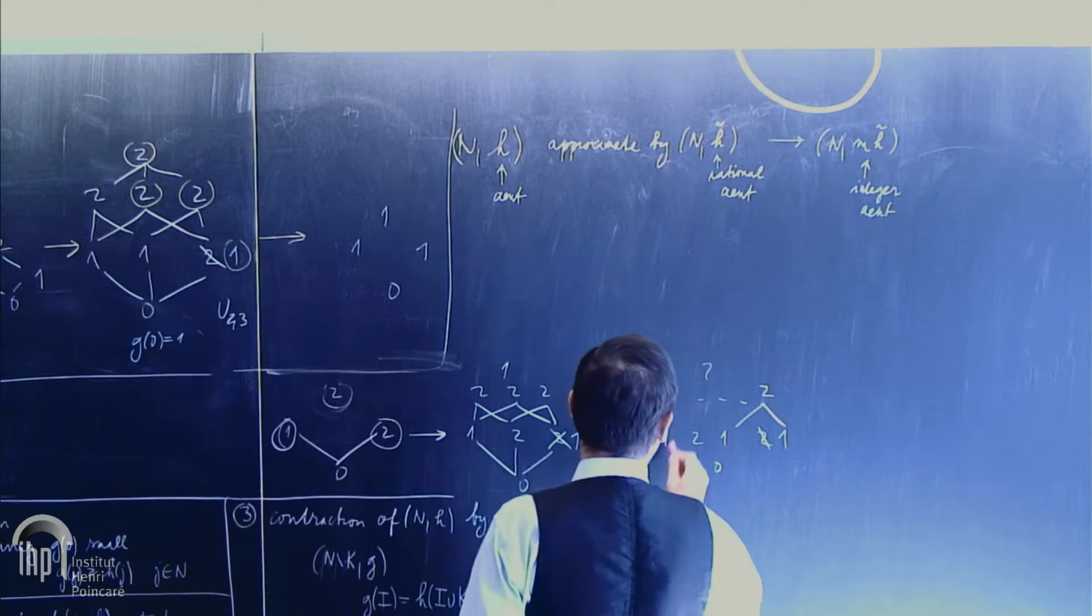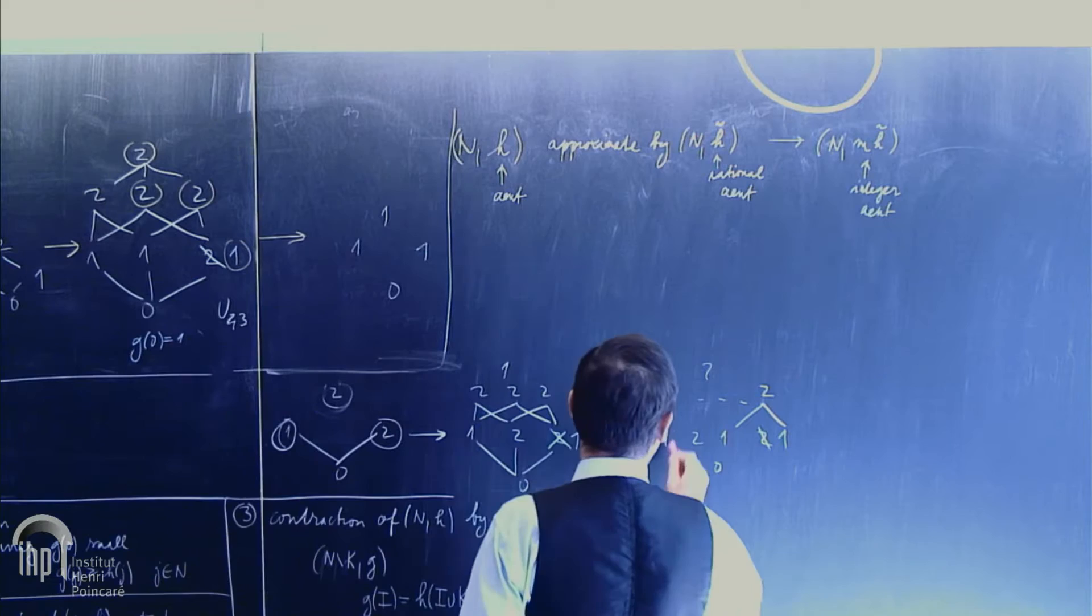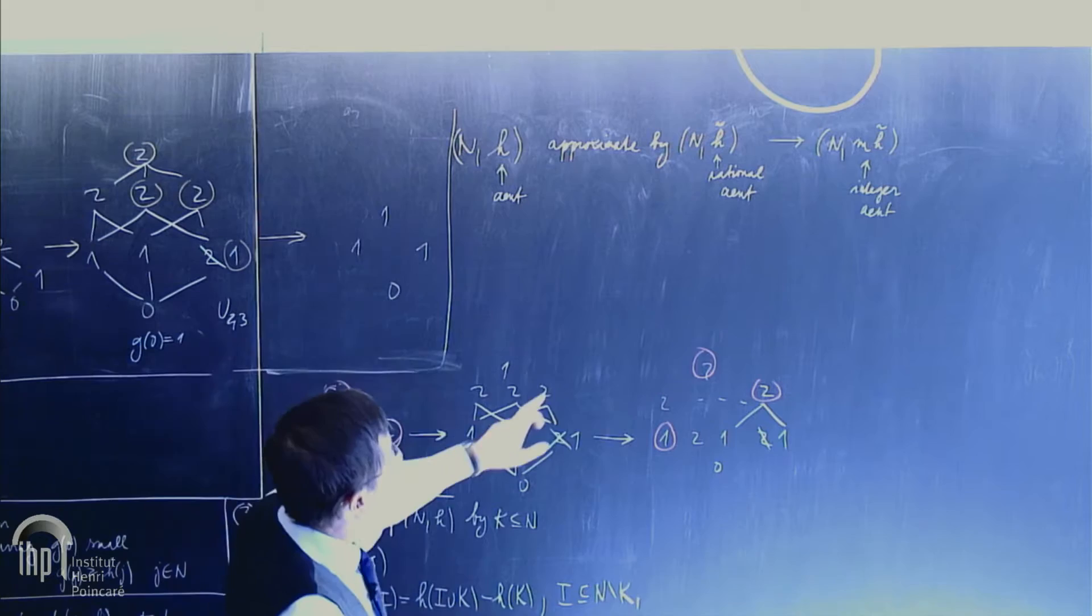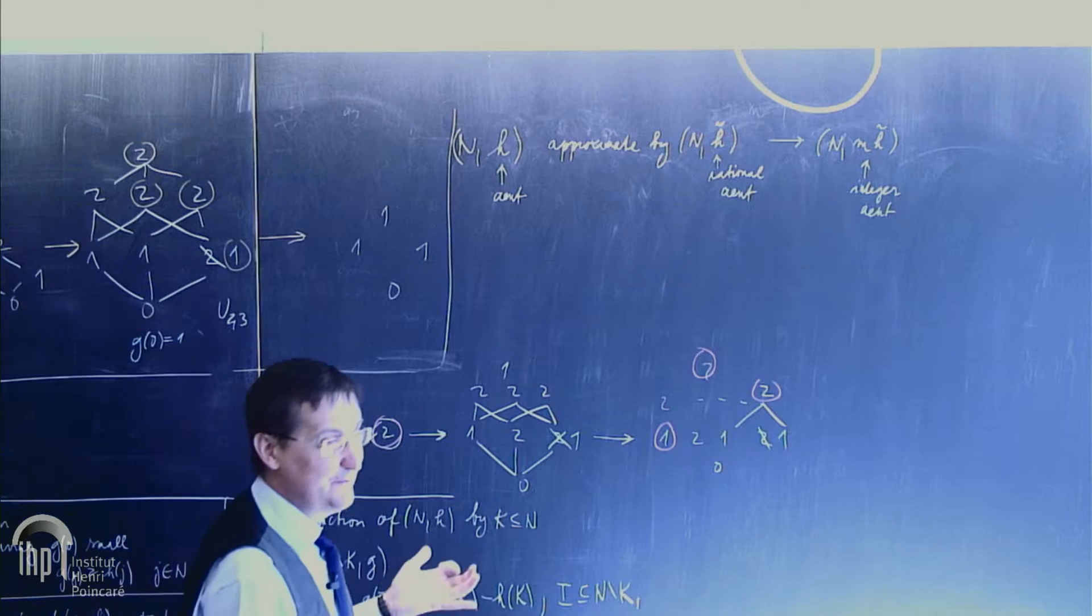So this, what is the same? The same is this. This and top. Yes. 1, 2, and 2. So this is the trick how to replace in the integer polymatroids one element with many others having entropy 1.